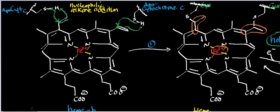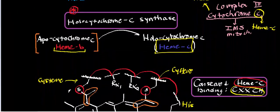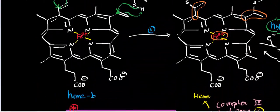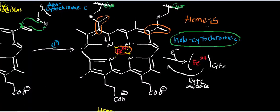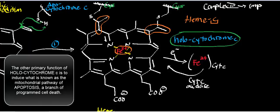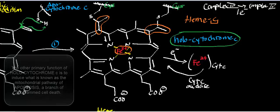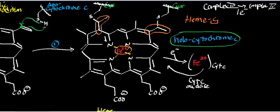Hopefully this video gave you some intuition on how cytochrome C works and the mechanism of hollow cytochrome C synthase. Keep in mind that the overall purpose of this soluble protein in the inner membrane space is to transfer electrons one at a time from complex 3 to complex 4 — from cytochrome C ubiquinol oxidoreductase to cytochrome C oxidase. If you can remember that, you should be good on any exam. See you in the next video.